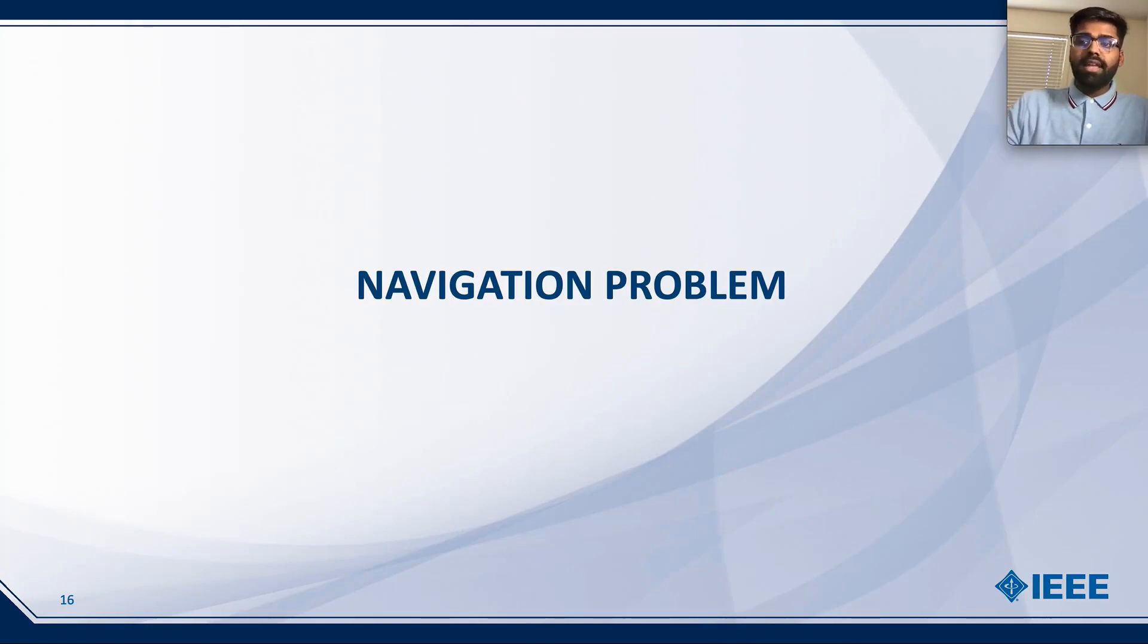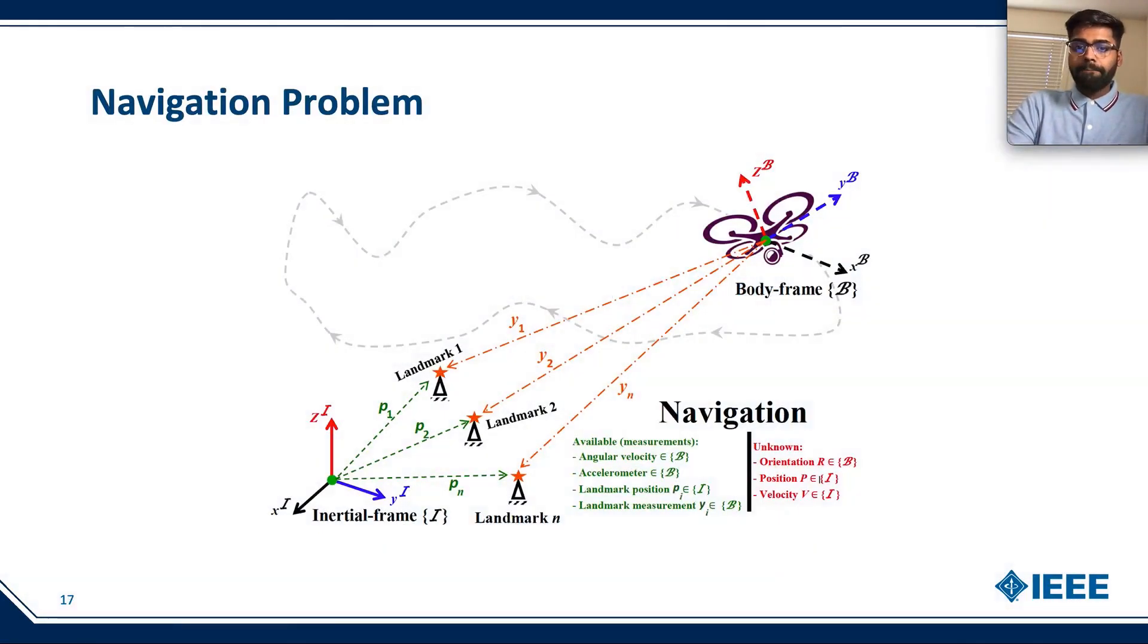Now let's move on to the navigation problem. This figure illustrates the navigation problem, where we have a set of available measurements, which includes angular velocity, accelerometer, landmark position, and landmark measurement. Alternatively, on the other side, we have a set of unknowns, such as orientation, position, and velocity.